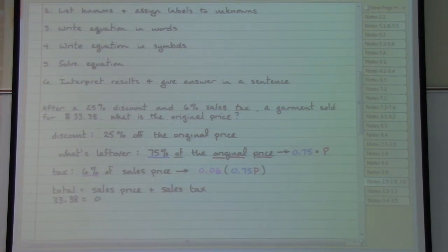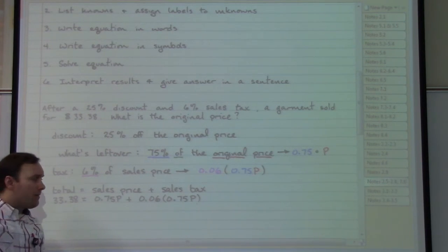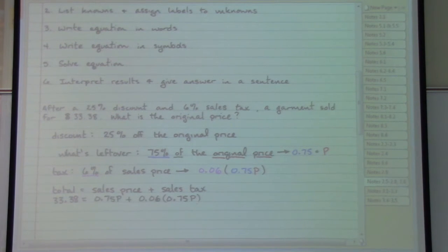We have 33.38 equals the sale price 0.75p plus the sales tax 0.06 times 0.75p. Not very friendly looking, but if we start trying to clean things up and make that a little bit more usable, we can go ahead and multiply out so that we would have 33.38 equals 0.75p plus 0.0435p. If I recall correctly, and I'm going to double check that very quickly with my calculator to make sure that I have not made any sort of a mistake.